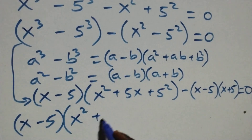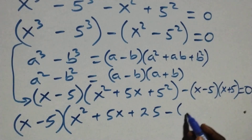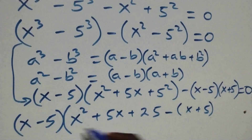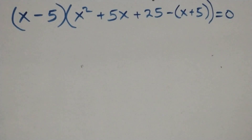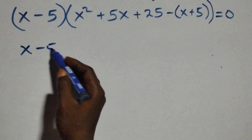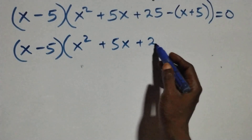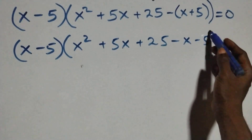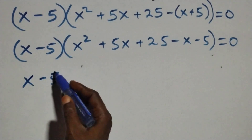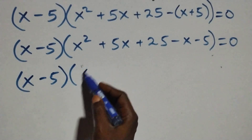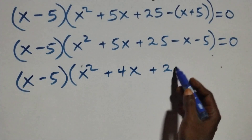We have (x squared plus 5x plus 25) then minus (x minus 5), close bracket, which equals to 0 here. The next step: we open the bracket and we have (x minus 5) times (x squared plus 5x plus 25 minus x minus 5), close bracket, equals to 0 here. Then this becomes (x minus 5)(x squared + 5x minus x + 25 minus 5) which gives (x minus 5)(x squared + 4x + 20).